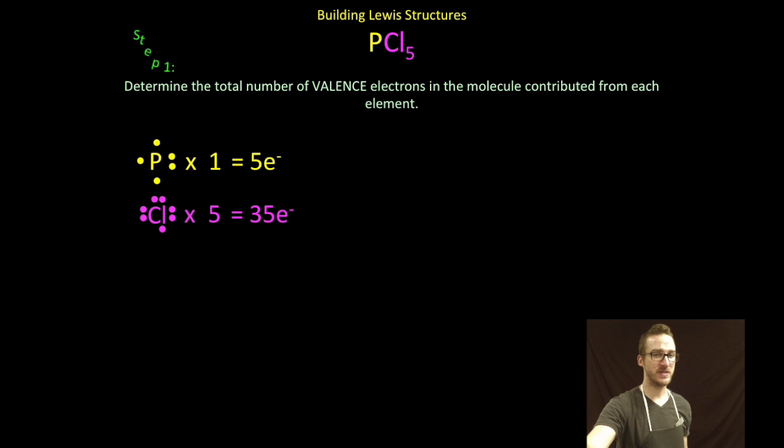And there's five atoms of chlorine. Each of them having seven valence electrons will contribute a total of 35 valence electrons to this molecule. Summing those together, we get a total of 40 valence electrons in this molecule to work with.